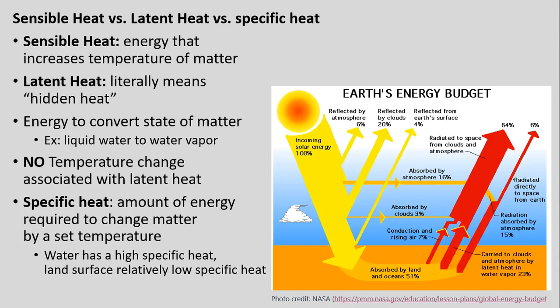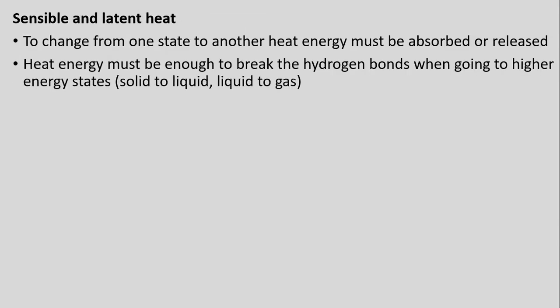The third concept is specific heat — the amount of energy required to change a given matter by a set temperature. Water has a very high specific heat relative to other surfaces; metals and land surfaces have a much lower specific heat. This means it takes a lot more energy to increase the temperature of water, or conversely a lot of energy must be released to cool it, while land generally heats up or cools off much more quickly because it takes far less energy to warm or cool it.